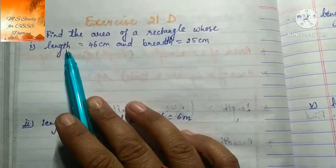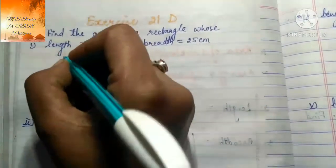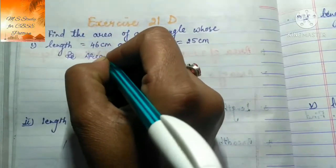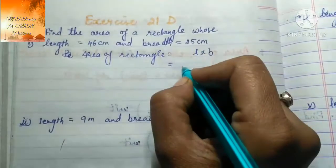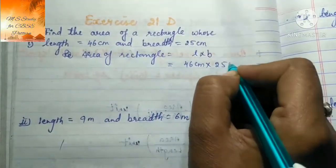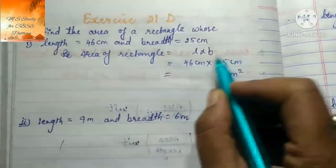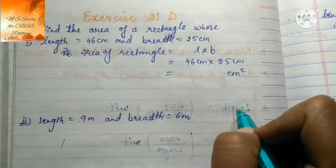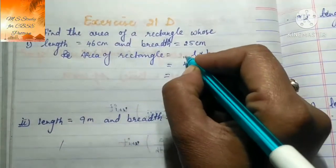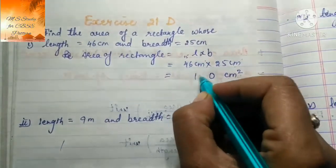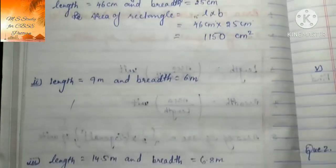Exercise 21D। Question: Find the area of a rectangle whose length is 46 cm and breadth 25 cm। Area of rectangle = length × breadth = 46 cm × 25 cm। Centimeter two times है तो यह centimeter square हो जाएगा। 25 को 46 से multiply करेंगे - answer आता है 1150 cm²। Area of rectangle = 1150 cm²।